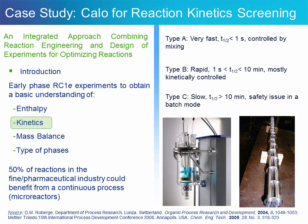As per Robergé's description, it is important to determine if a chemical reaction is very fast — therefore controlled by mixing — or if it is just rapid, with a half-life of one second to ten minutes, meaning kinetically controlled where mixing time is shorter than reaction time. If the reaction is characterized as a slow one, then process safety may be an issue on a large scale in batch mode, as thermal accumulation is likely to be very high.